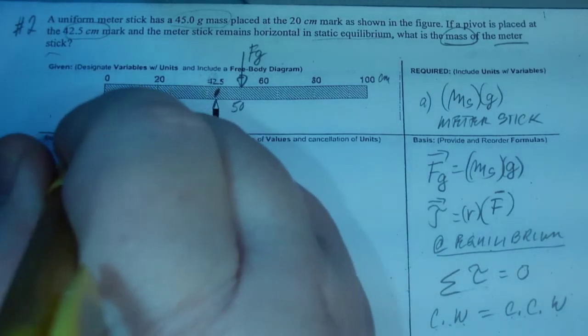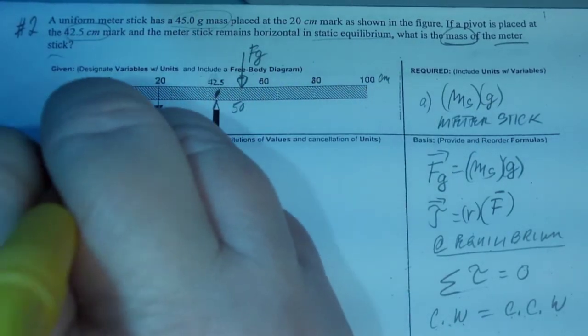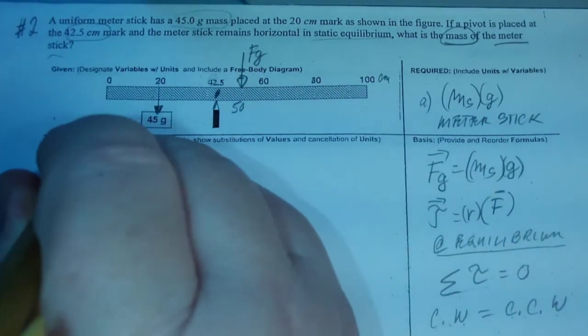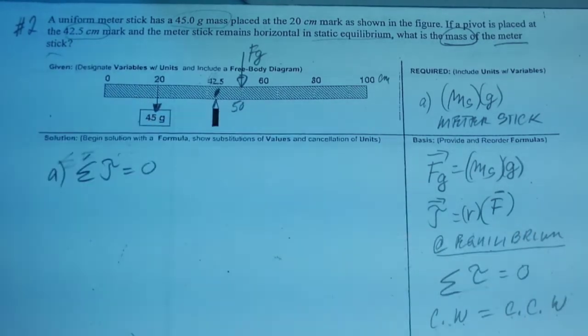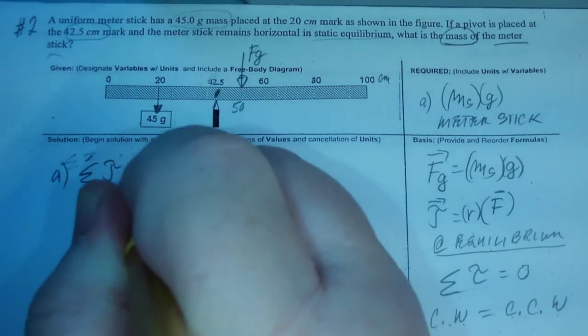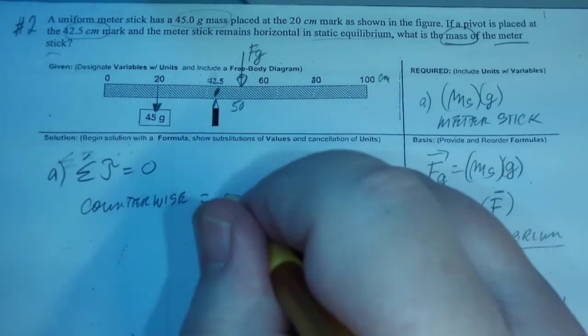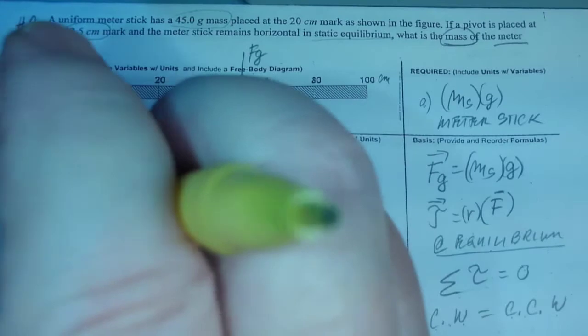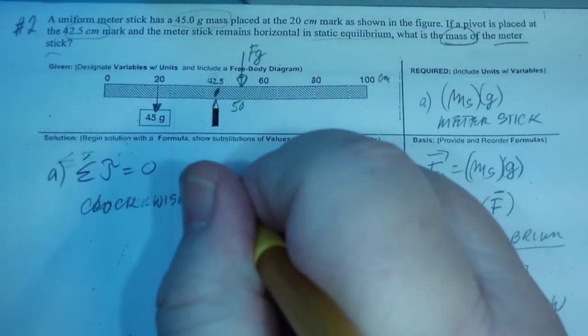Again, we write here, summation of all torques is equal to zero, which means counterclockwise, I'll write it down, but you don't have to. You can use the initials, is equal to clockwise, sorry, clockwise is equal to counterclockwise.